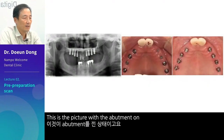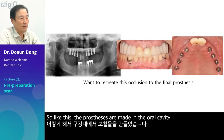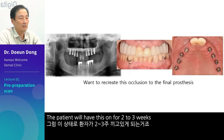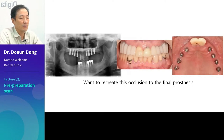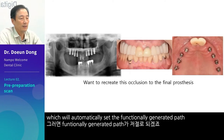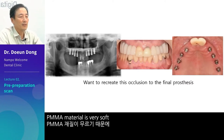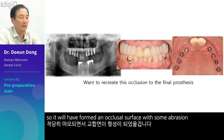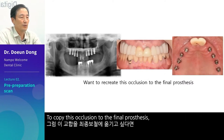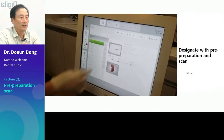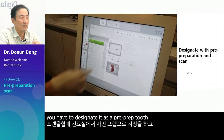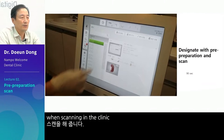This is the picture with the abutment on. So the prostheses are made in the oral cavity. The patient will have this on for two to three weeks, which will automatically set the functionally generated path. PMMA material is very soft, though it will have formed an occlusal surface with some abrasion. To copy this occlusion to the final prosthesis, you have to designate it as a pre-prep tooth when scanning in the clinic.